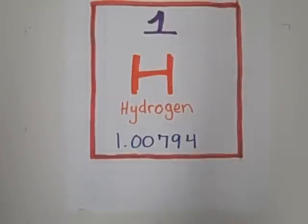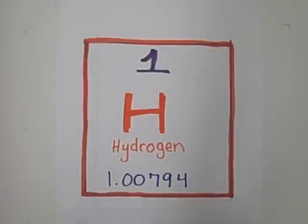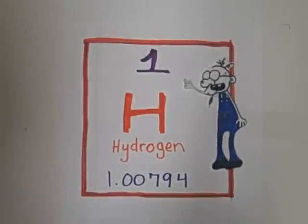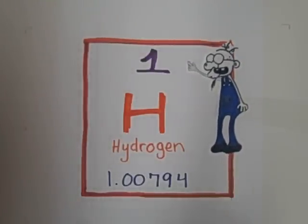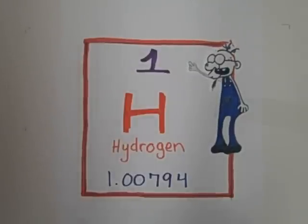Now this here element box y'all see here is Hydrogen, for example. This here number y'all call the atom number. That tells y'all how many electrons and neutrons are in the atom of this here element.